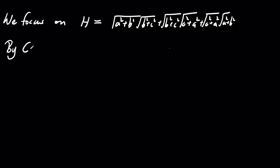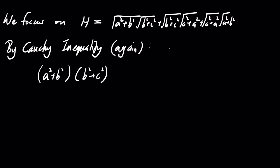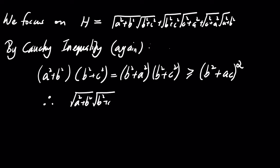Using the Cauchy-Schwarz inequality again, we get: the product of A squared plus B squared and B squared plus C squared is greater than or equal to B squared plus AC, all squared. We can now apply this same reasoning to the other terms, giving us: the square root of A squared plus B squared times the square root of B squared plus C squared is greater than or equal to B squared plus AC.